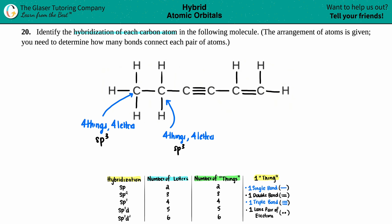Now let's do this carbon up top. This carbon has one single bond and one triple bond - and a triple bond is classified as one whole thing. So this carbon only has two things. Two things, two letters: sp.